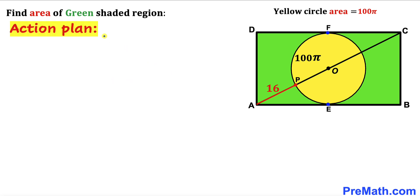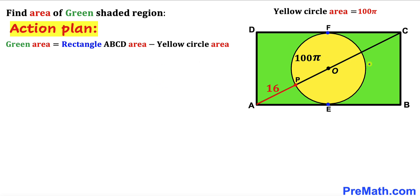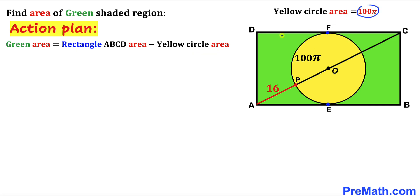Here's our action plan. We can see that the green shaded area is equal to the area of the big rectangle ABCD minus the area of the yellow circle. We know that the area of the yellow circle is 100π, so our task is now to calculate the area of rectangle ABCD.